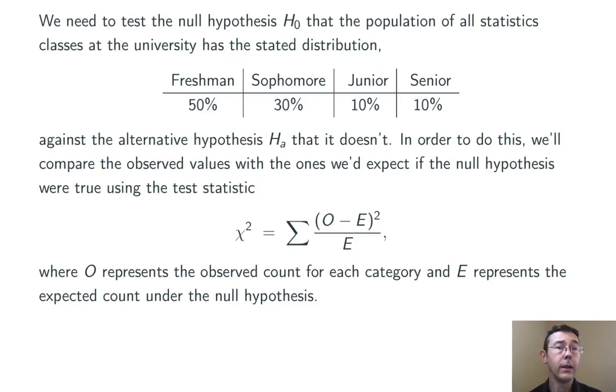Let's let O be the observed counts in these different cells in our table, and let's let E be the counts that we would expect if the null hypothesis were true.